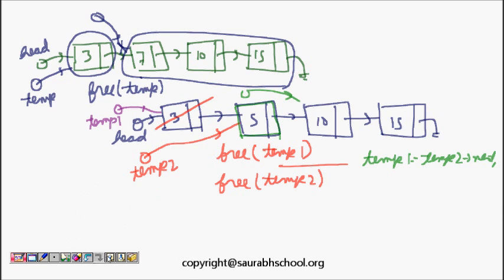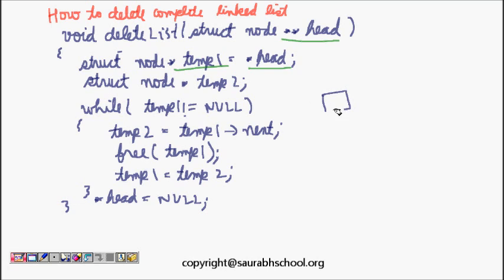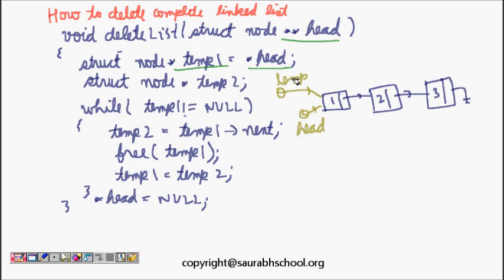Let's see how to code this. I have void deleteList taking struct node** head, because I am changing the pointer itself so I need a reference to the pointer. struct node* temp1 = *head. Taking a small example: nodes 1, 2, and 3 — head and temp1 both point to node 1. struct node* temp2 is also defined but not yet initialized. Then while temp1 is not equal to null, I need to traverse the list.